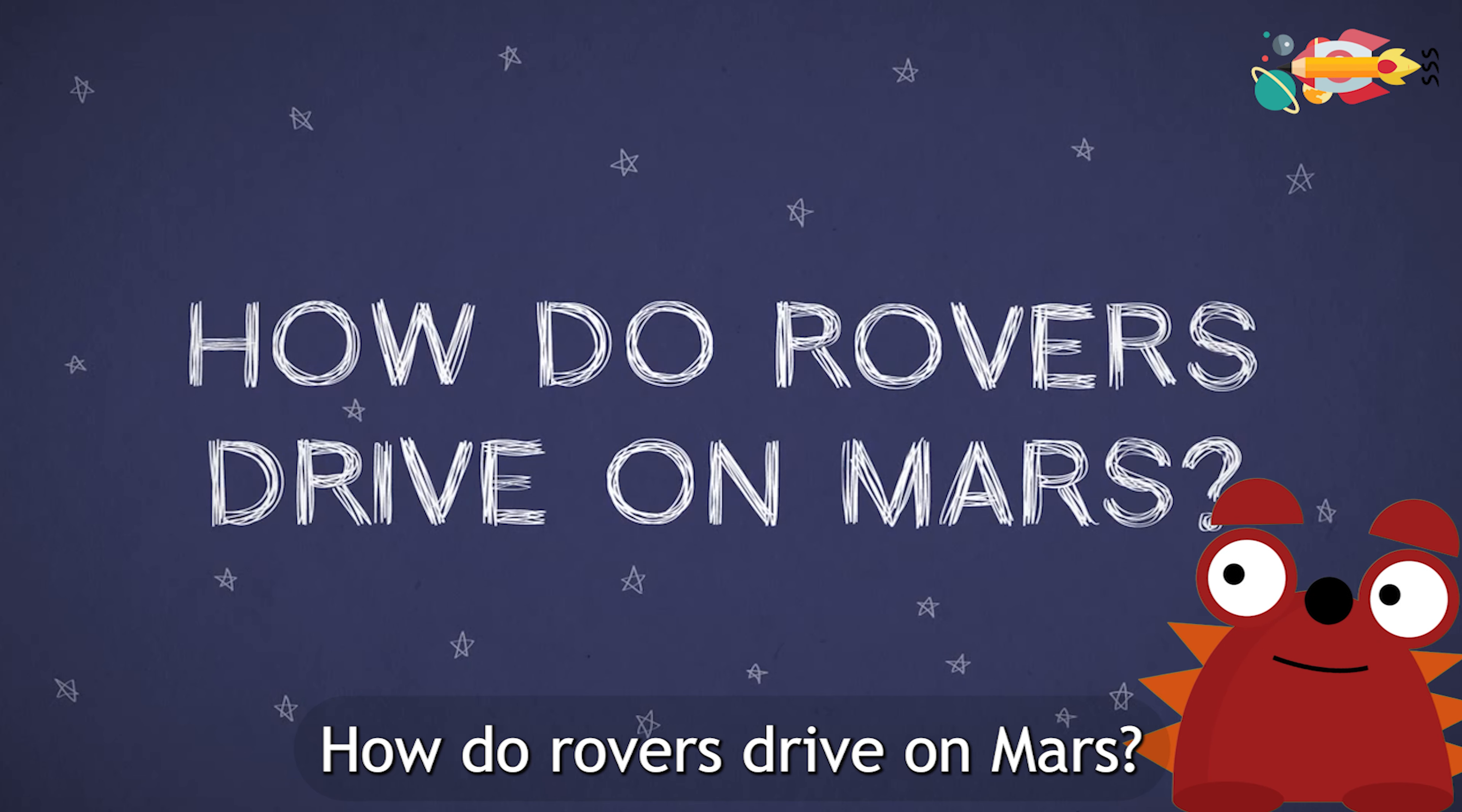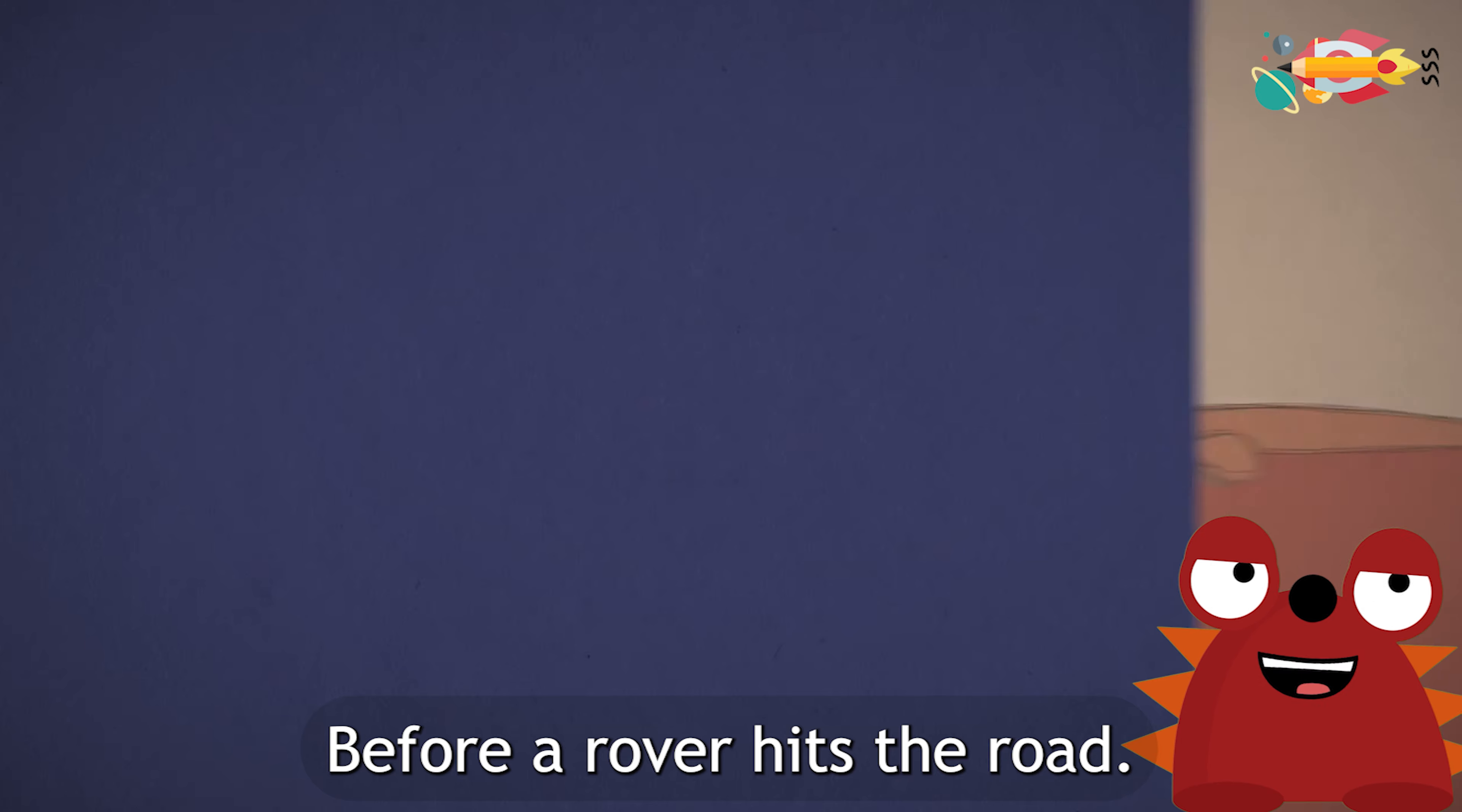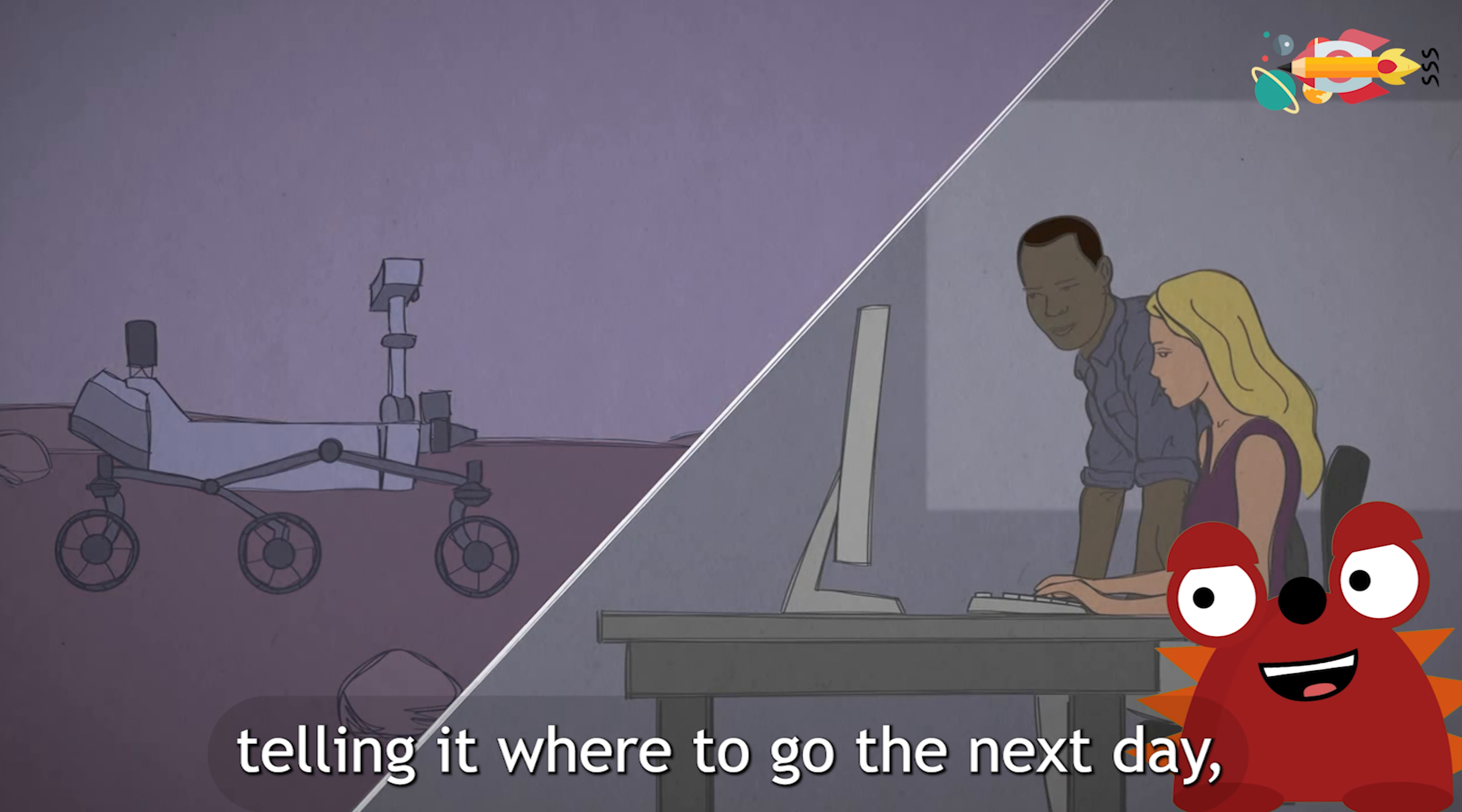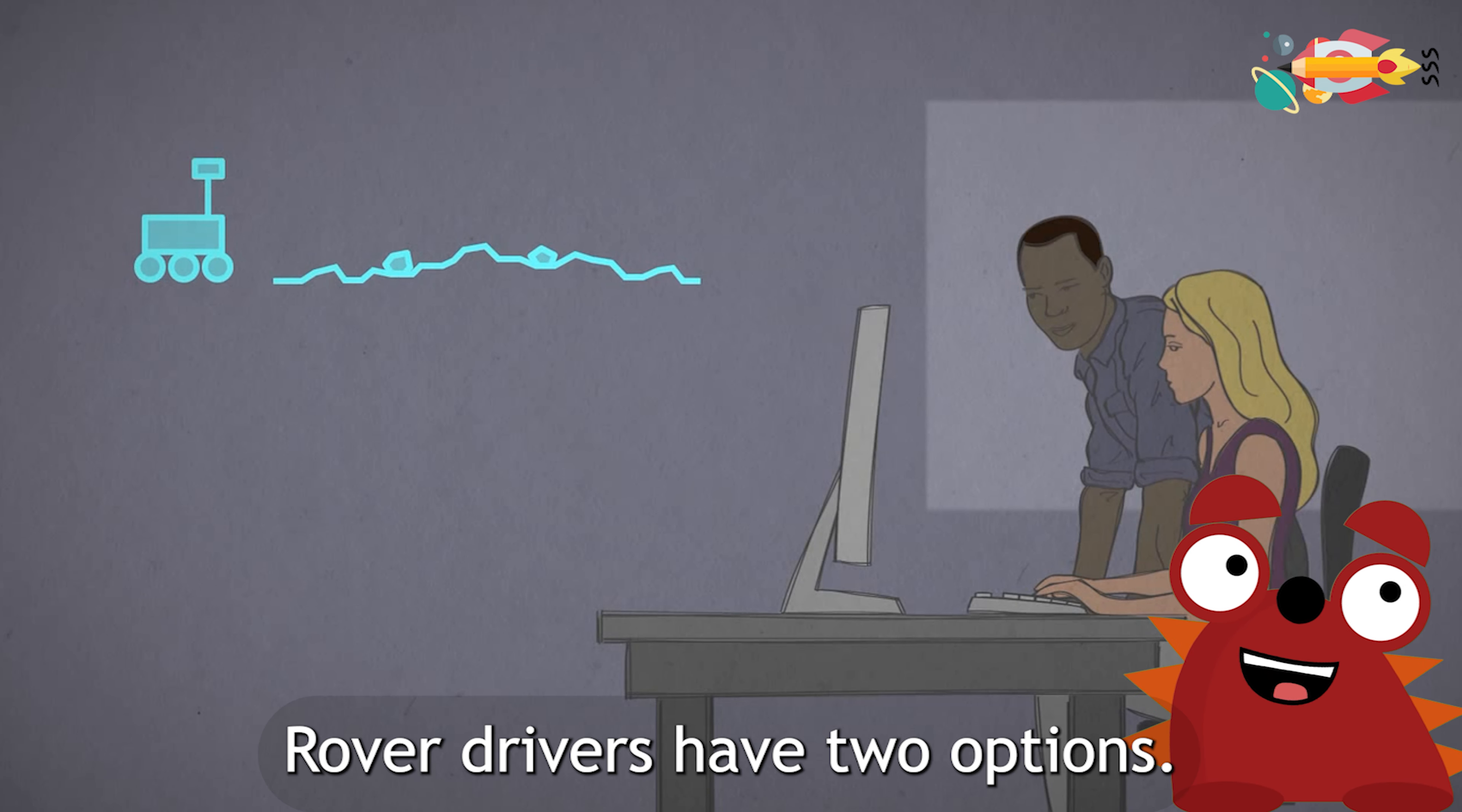How do rovers drive on Mars? First of all, there's no joystick for driving a Mars rover. Before a rover hits the road, engineers send computer commands overnight telling it where to go the next day. Depending on how tricky the terrain is, rover drivers have two options.